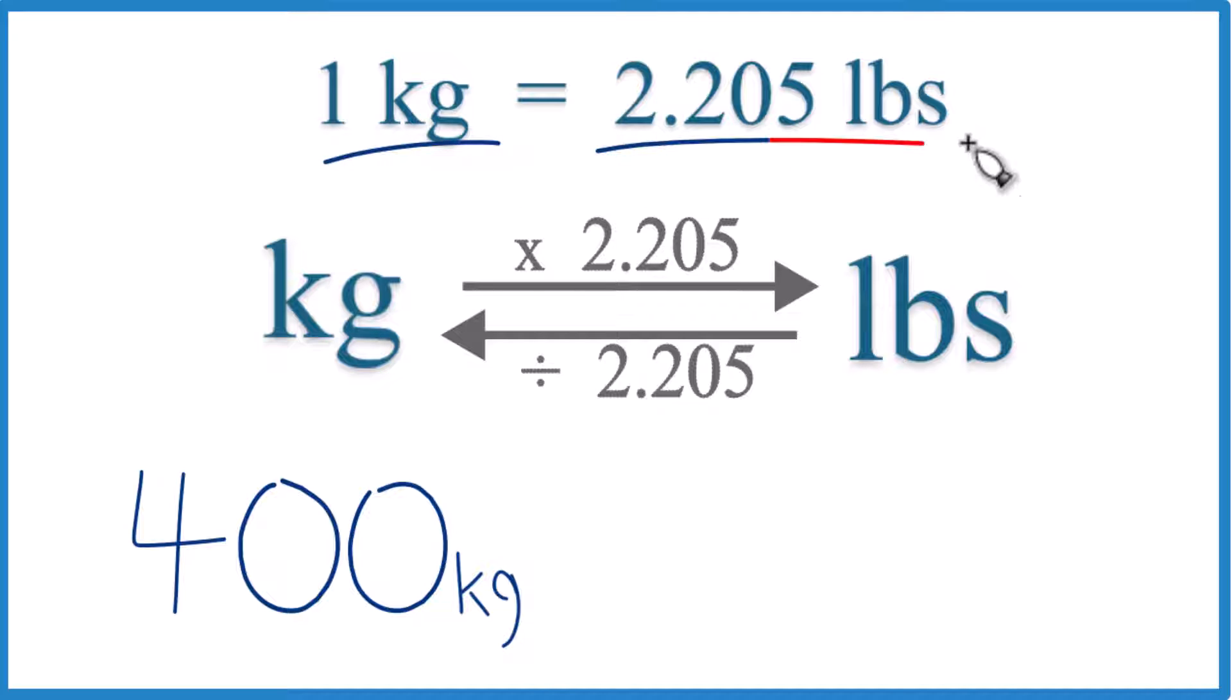One kilogram equals 2.205 pounds. So if you think about it, if one kilogram is 2.205, 400 is just going to be 400 times that number.